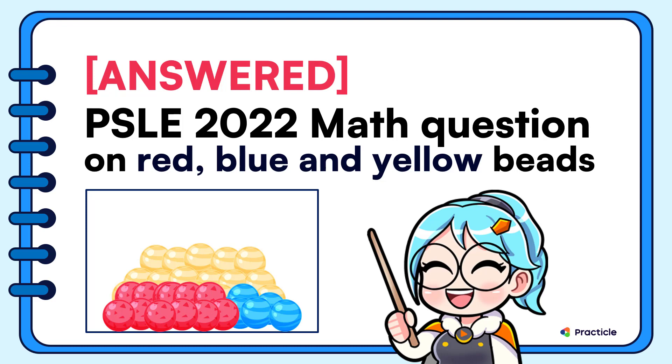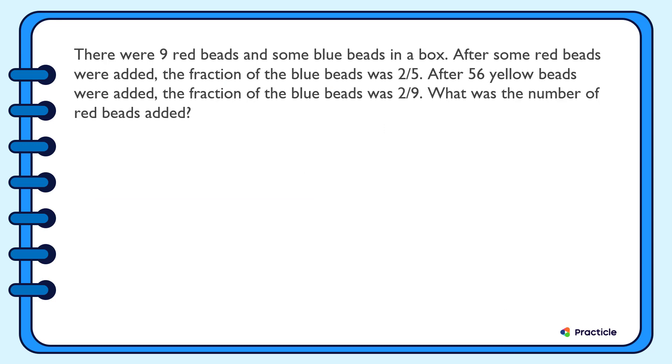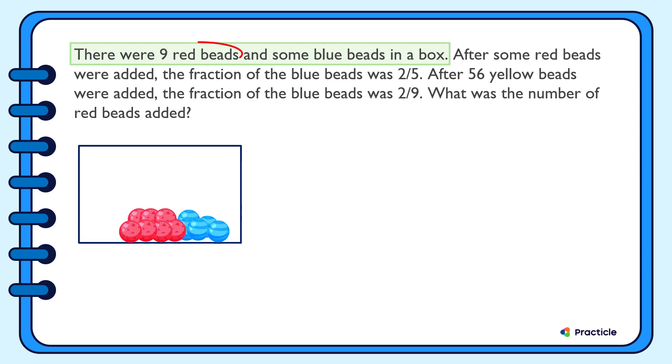Let's start by reading this math question. There were 9 red beads and some blue beads in a box. What do we know? We have two kinds of beads, agree? Red beads and blue beads. And how many of each do we have? Well, we are given that there were 9 red beads, but we don't know the number of blue beads. Let's read on to see what else we are given.